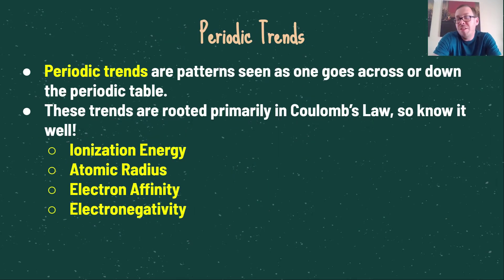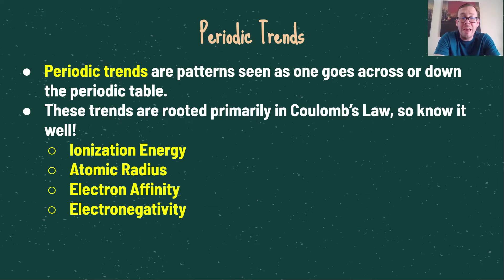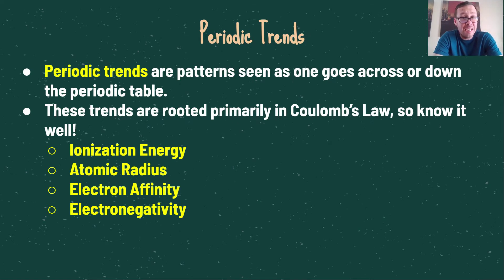Periodic trends are simply patterns that we see as we either go across or go up and down the periodic table. These trends are very well rooted in Coulomb's Law, so we need to know it very well. The four periodic trends we are going to look at are ionization energy, atomic radius, electron affinity, and electronegativity.